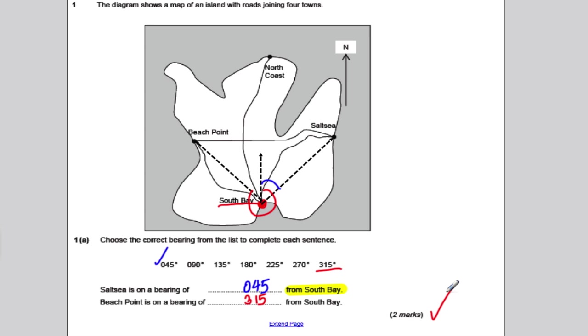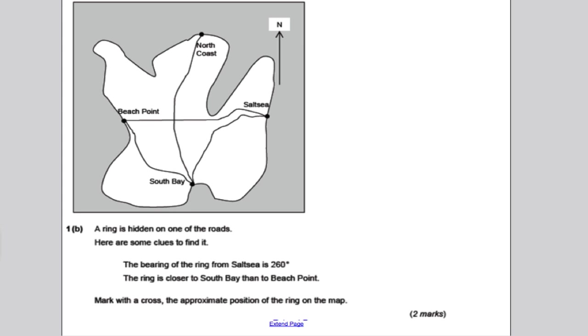Same question, but different part of the question. Pause the video, have a go, and in 10 seconds I'll go through. It says here that there is a ring on one of the roads, and it's hidden. And here are clues to find it.